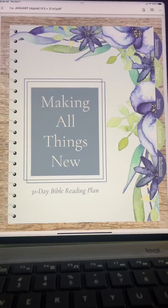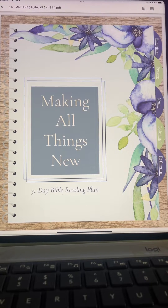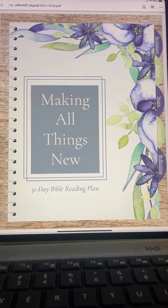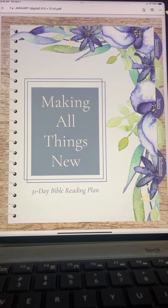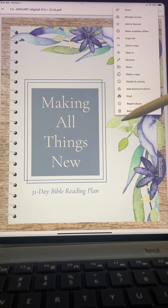It's going to open up what looks like the planner. From here you need to click on these three dots in the top right corner, and this drop-down menu will come up.